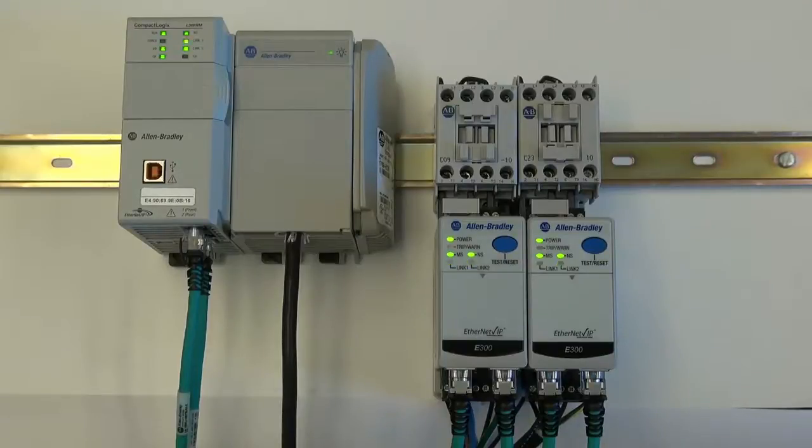In this example, we will demonstrate what happens when a network link is disrupted between a device on a device level ring. For this demonstration, we have two E300 electronic overload relays and a CompactLogix L36ERM. The CompactLogix is configured as the device level ringmaster. Currently, the L36ERM is commanding both contactors to be energized via the E300 electronic overload relay.